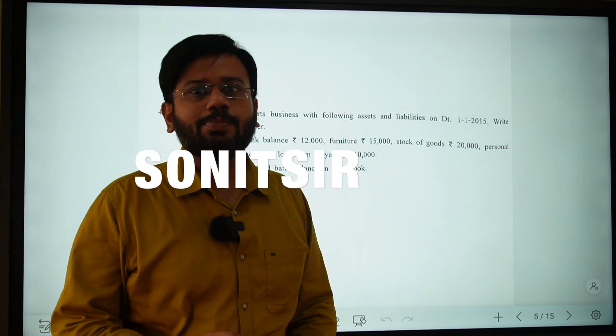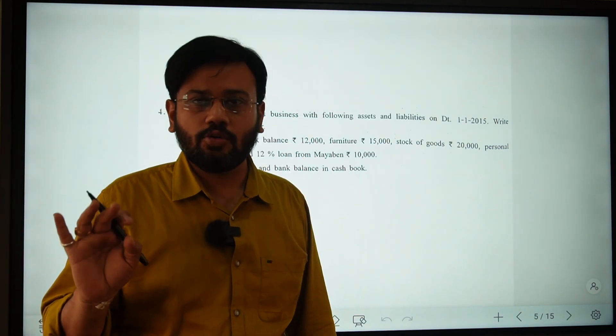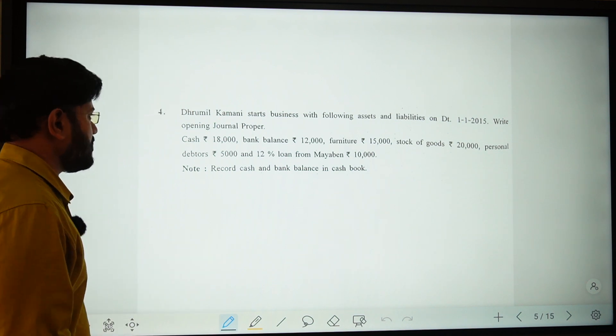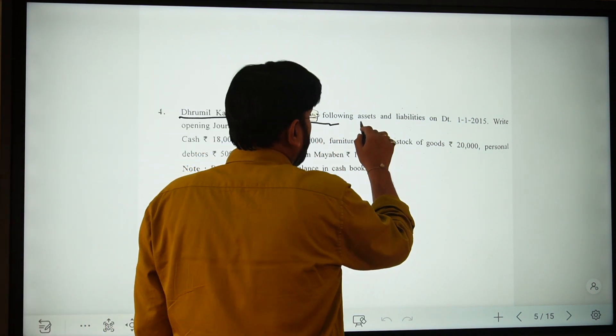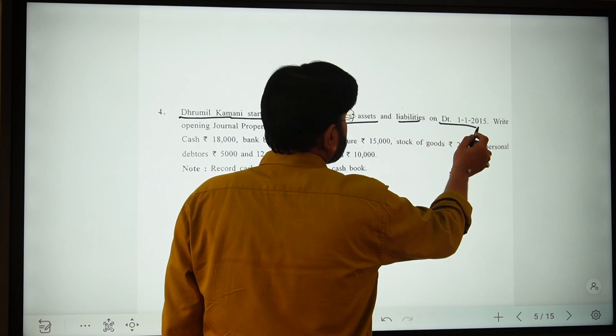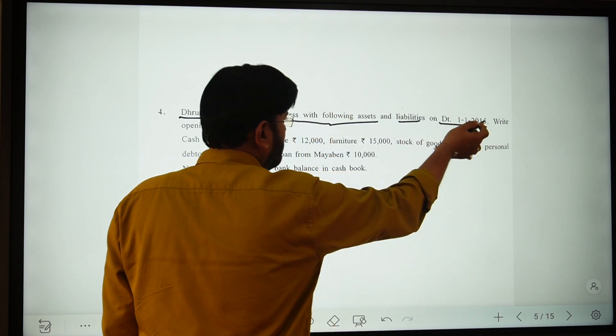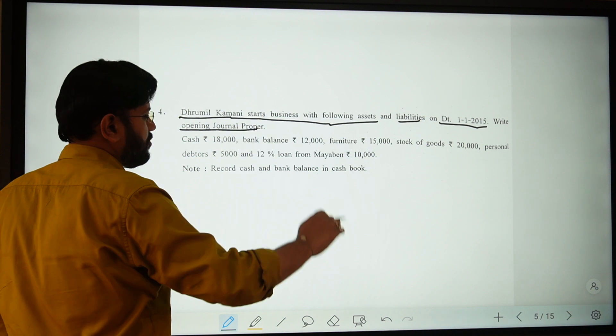Let's start with the opening journal entry. Trumil Kamani starts a business with the following assets and liabilities on 1st January 2015. Write the opening journal proper.